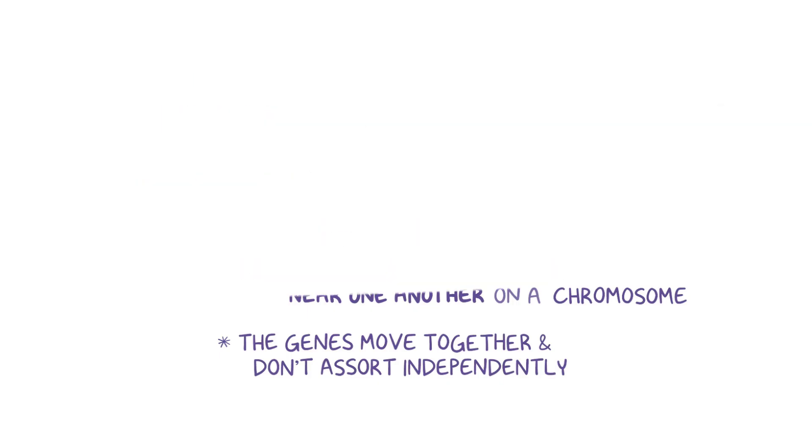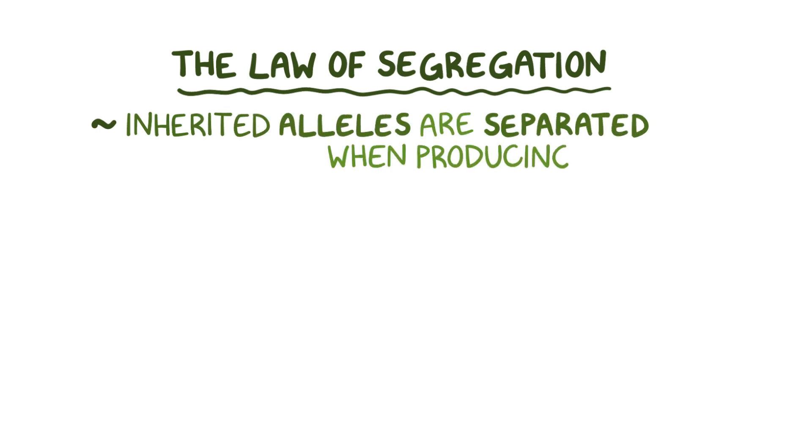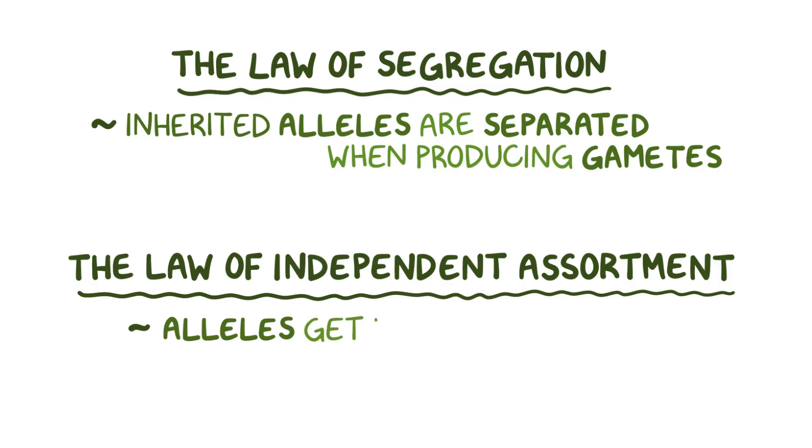As a quick recap, the law of segregation states that inherited alleles are separated when producing gametes, and the law of independent assortment states that the alleles get distributed to offspring randomly and without regard to what other allele the offspring might have received.